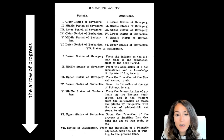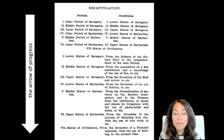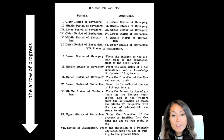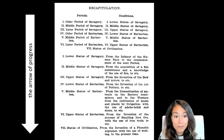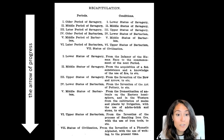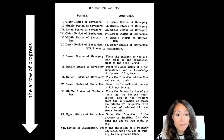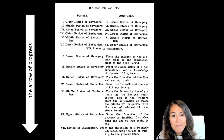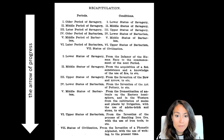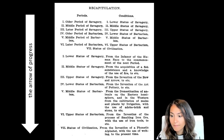Based on his observations of indigenous groups in the United States, Morgan developed a theory of cultural evolution. This theory was unilineal, meaning that it moved in one direction and had three basic phases with several subcategories within each phase.